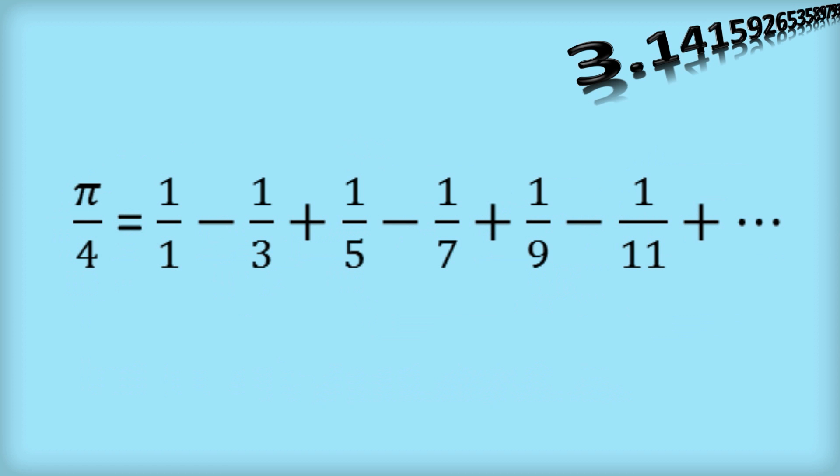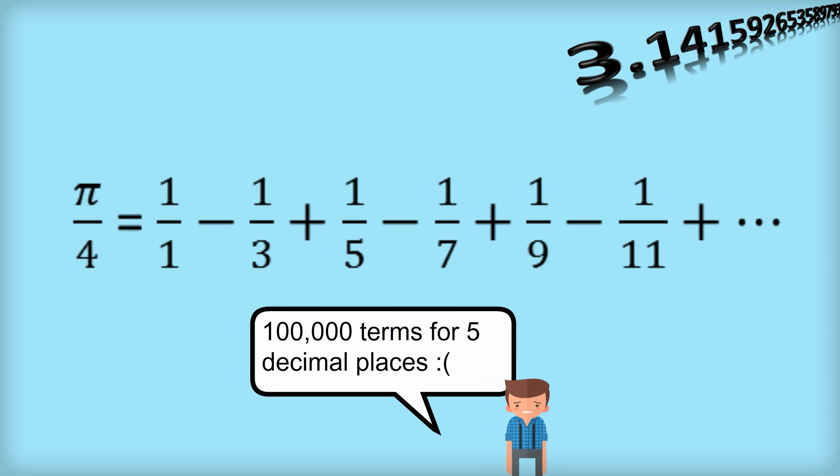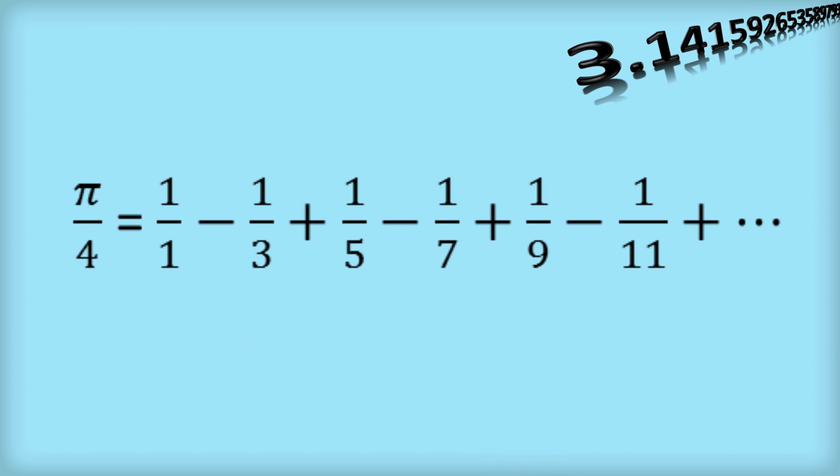Here's another one. It's generally called the Gregory series or Gregory-Leibniz series. It's a really nice one because it's in some ways the simplest. You're just adding and subtracting very simple sorts of fractions. Not very good though. You need a hundred thousand terms to get pi correct to five decimal places.